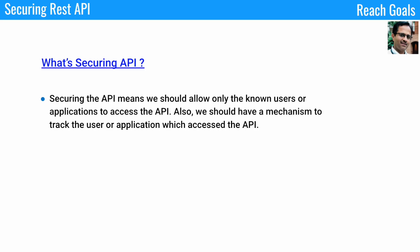Let us also understand what is meant by securing an API. Securing the API means we should allow only the known users or applications to access the API. Also, we should have a mechanism to track the user or the application which talks to the API.